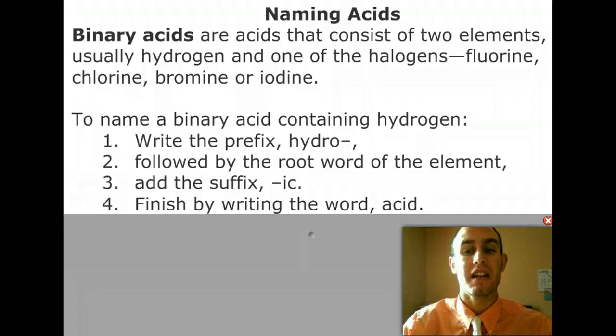Binary means two. So we have two different elements being bonded together. Typically, it's hydrogen and one of the halogens. You should know those are group 17 on the periodic table.